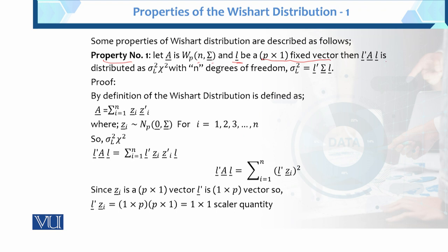Then L'AL — which involves the cross product or square terms — is distributed as sigma squared chi-square with n degrees of freedom. So sigma squared L equals this. In Property 1, we have a transformation on the Wishart: A is multivariate, and it is converted into univariate through this transformation.